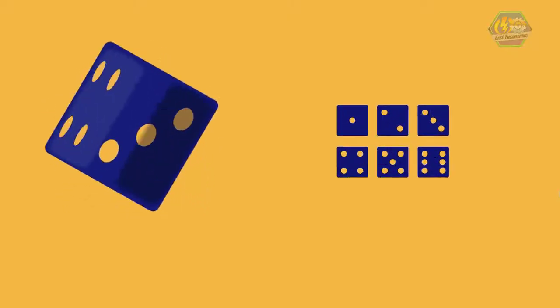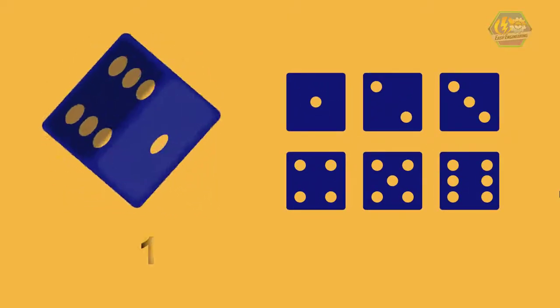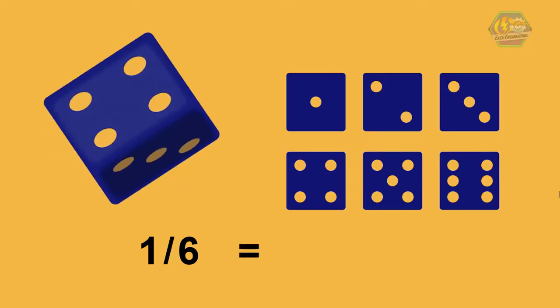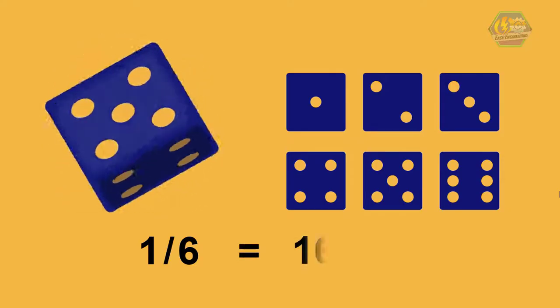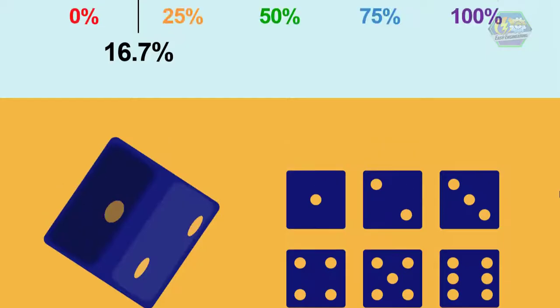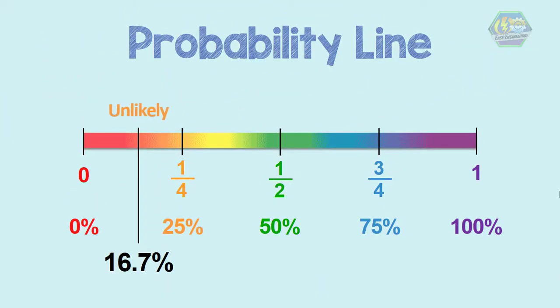In the case of rolling a dice, there are 6 possibilities, so 1 divided by 6 is 1 over 6, which is equivalent to 16.7%. This means that it is unlikely to get a specific number, but it is just as likely as rolling any other number.